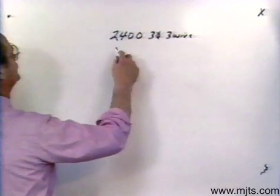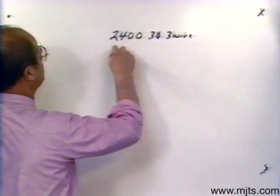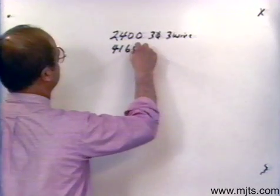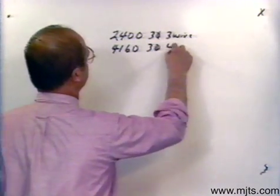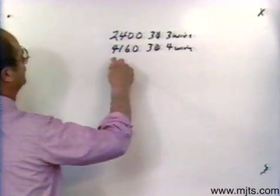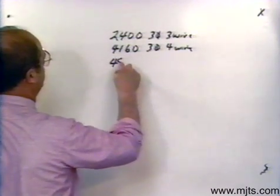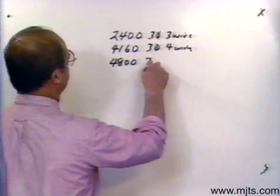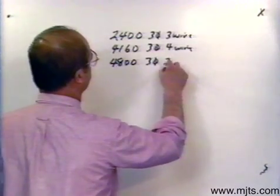One of the next ones you'll see would be 4160, three-phase, four-wire. Coming on down now we'll have 4800, three-phase, three-wire.